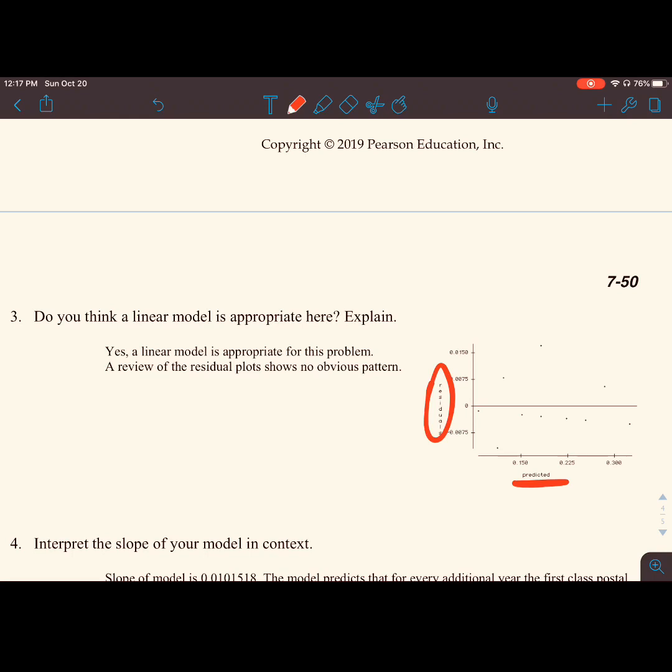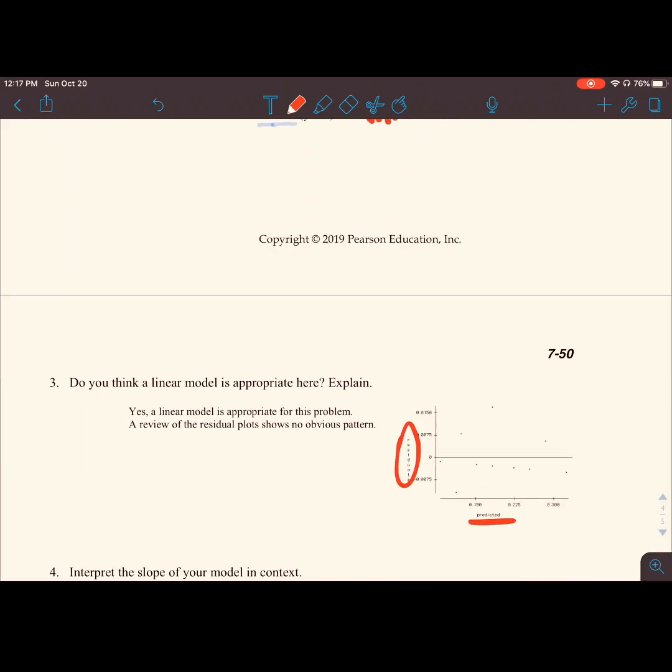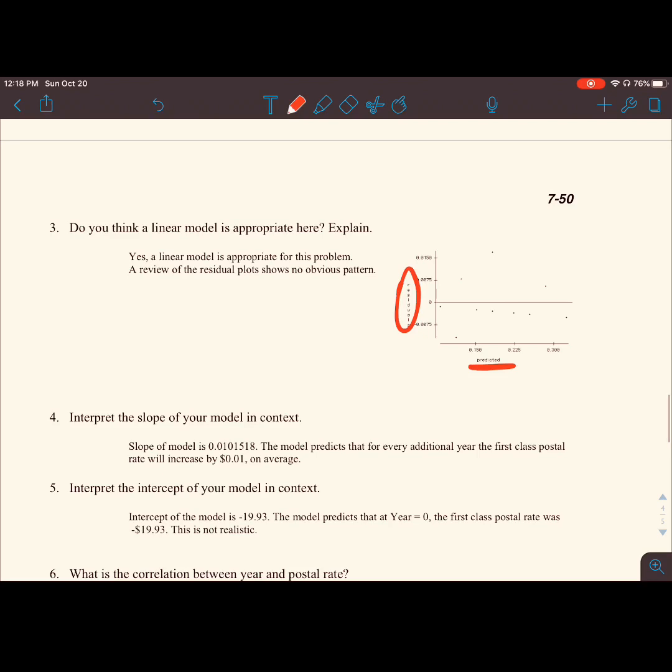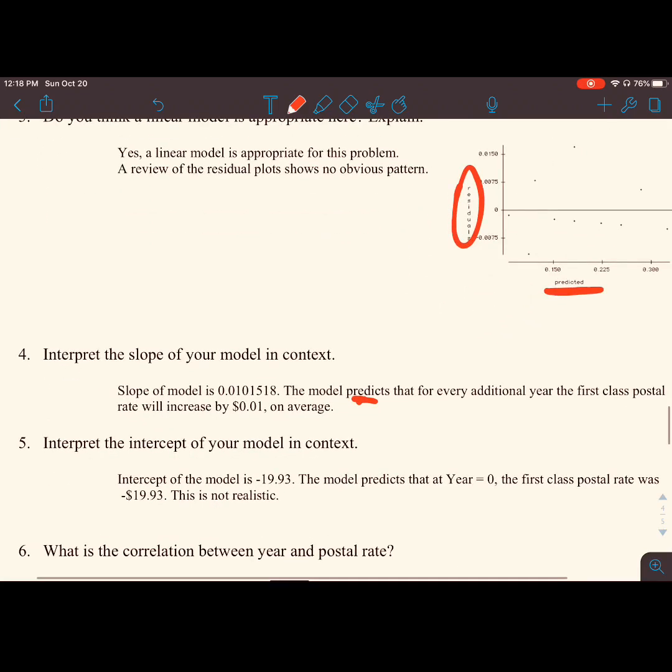Once we see that linear regression models are fine, we want to interpret the slope, interpret the y-intercept, and interpret the r squared. Just always think r, correlation coefficient, r squared, coefficient of dependence - that's our variability. How much variability is due to the other. Interpret the slope of the model in context. We saw that the slope of the model was 0.01015. This means the model predicts, that's our weasel word, that for every additional year, the first class postal rate will increase by about one cent on average.